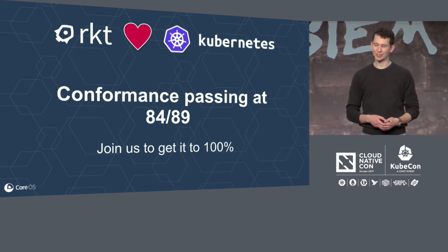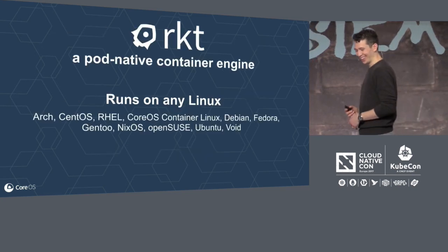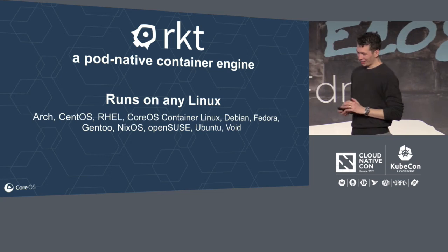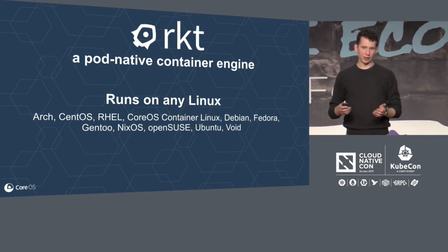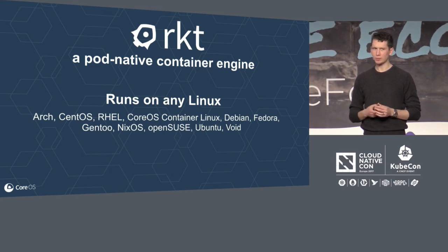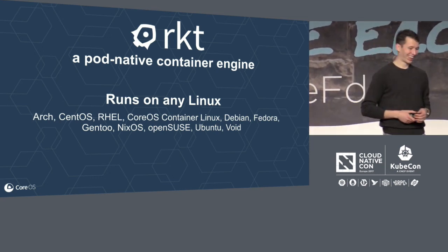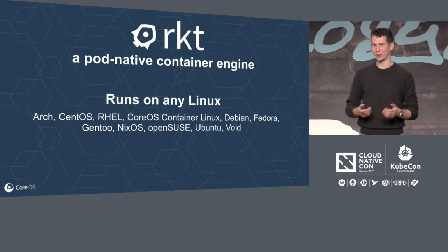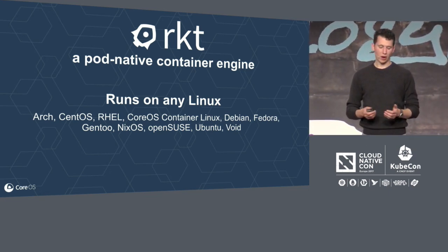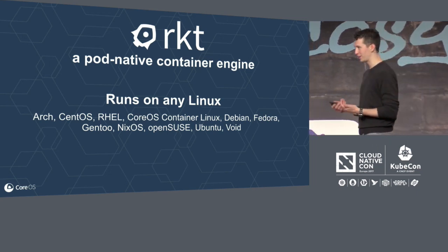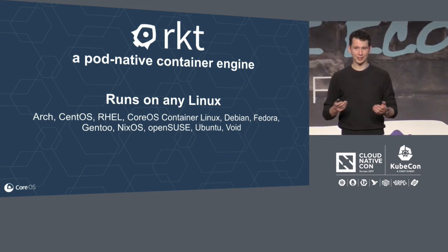The reason there are five left is that some things are tricky. Rocket can run on top of any Linux distro — if you're using Linux, you're able to get Rocket running on your system. We build RPMs and debs on every release, and there are native packages for pretty much everything, including distros I hadn't heard about until I read the docs, like Void Linux.